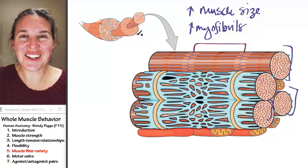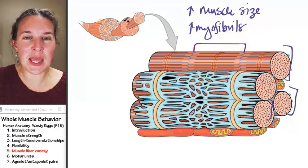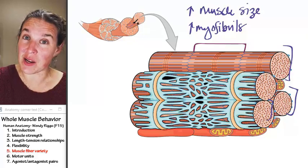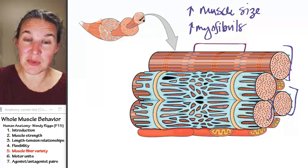So I'm reminding you again of our structure. Here is a bundle, a fascicle is a bundle of different kinds of myofibers, different muscle cells.